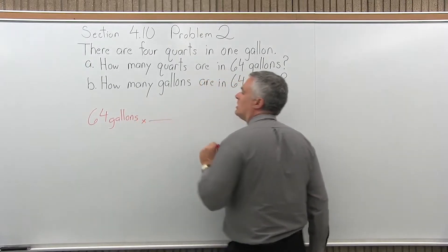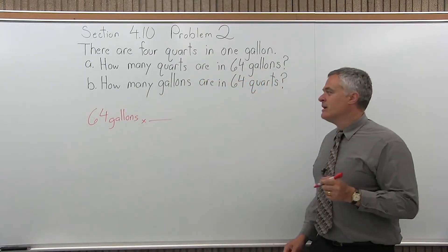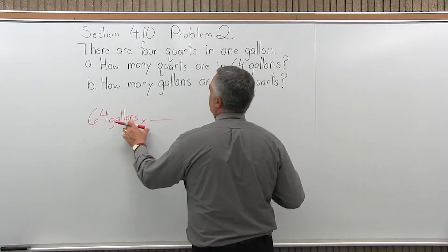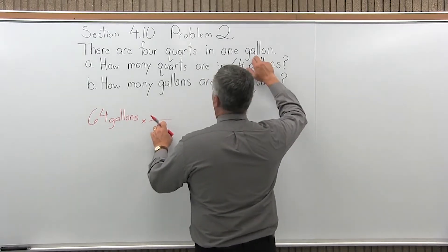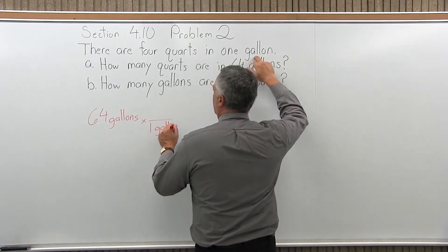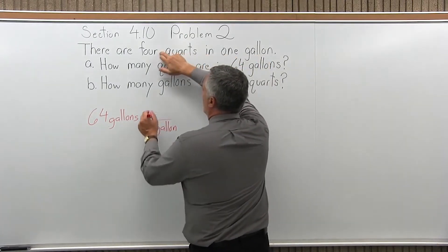And we're going to multiply that by a special number one. Now you want to put the units in the denominator that will cancel the units that are given. So one gallon is equal to four quarts.